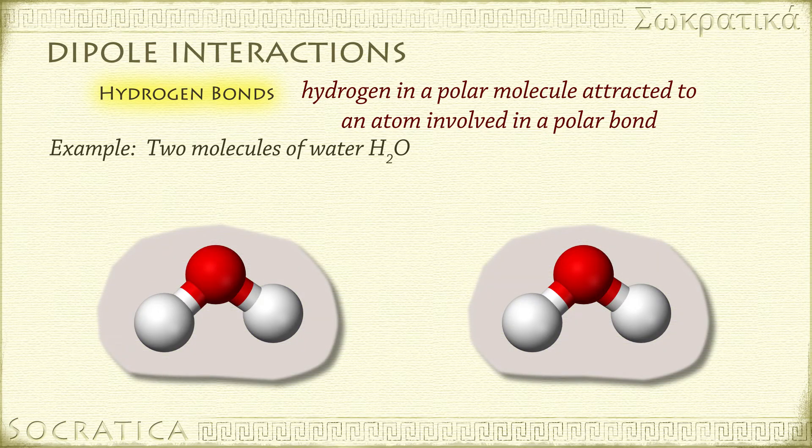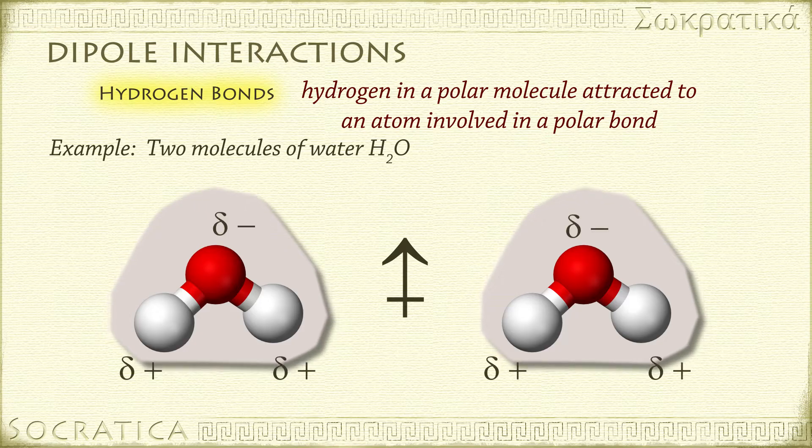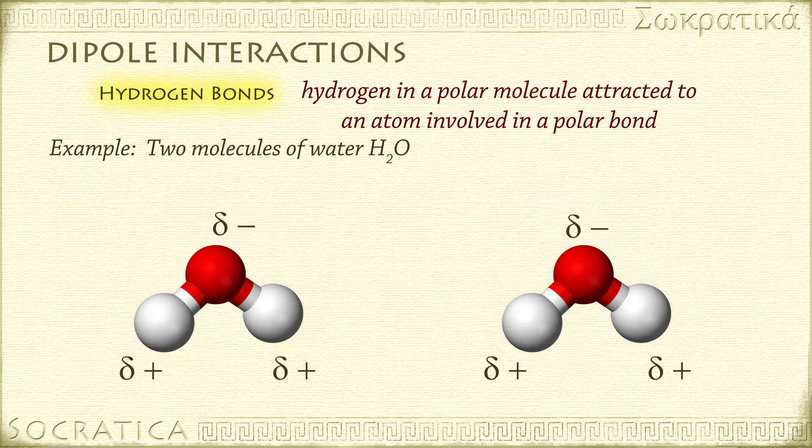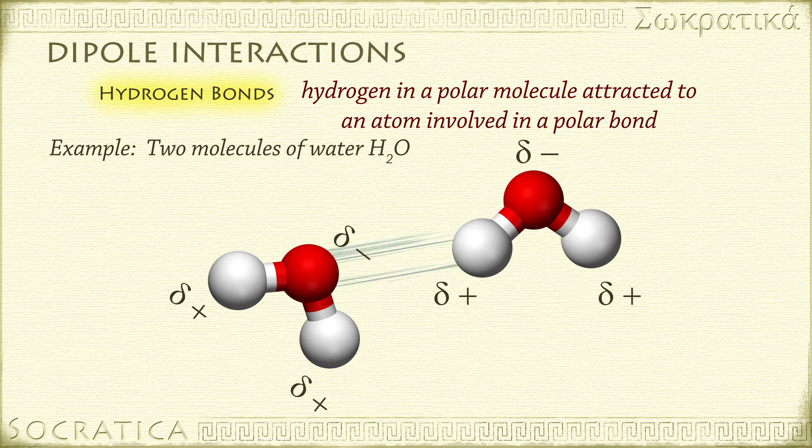Fluorine, oxygen, and nitrogen are so electronegative, they are typically involved in extremely polar bonds. These electronegative atoms pull electrons closer to themselves, resulting in a partial negative charge. The hydrogen then has a partial positive charge, so the two atoms in the different molecules are attracted to each other.